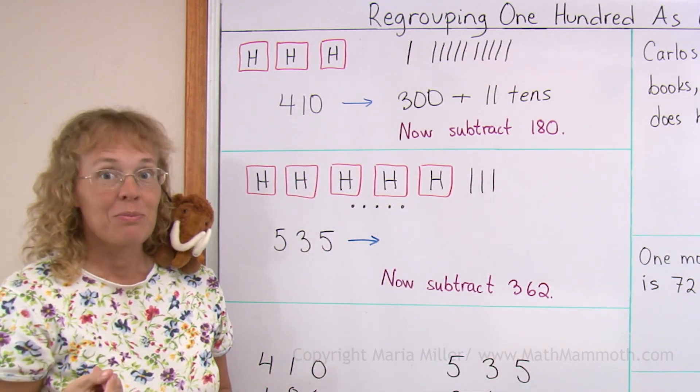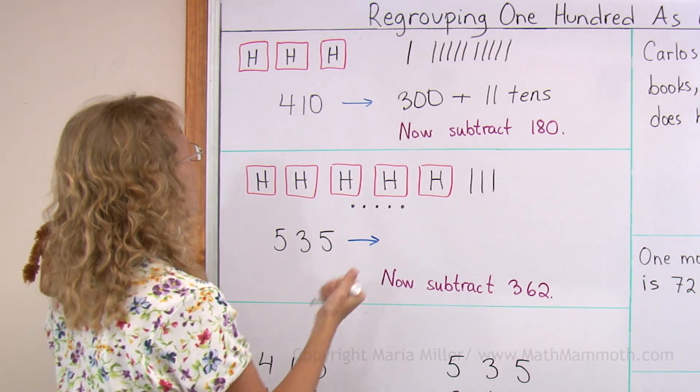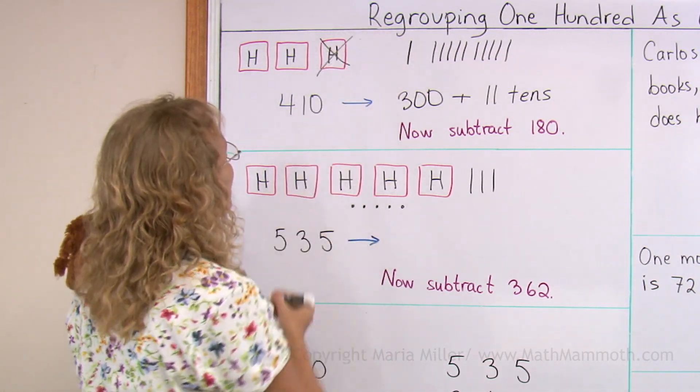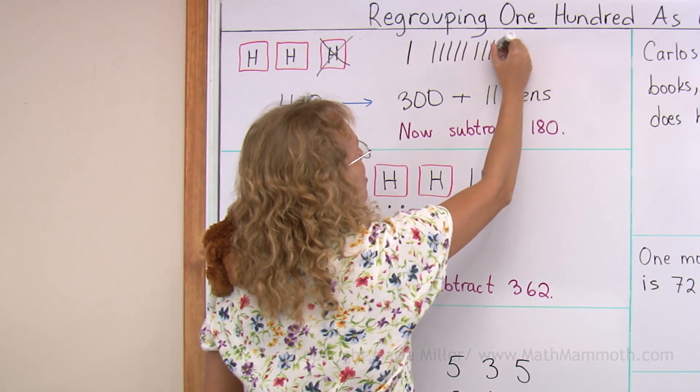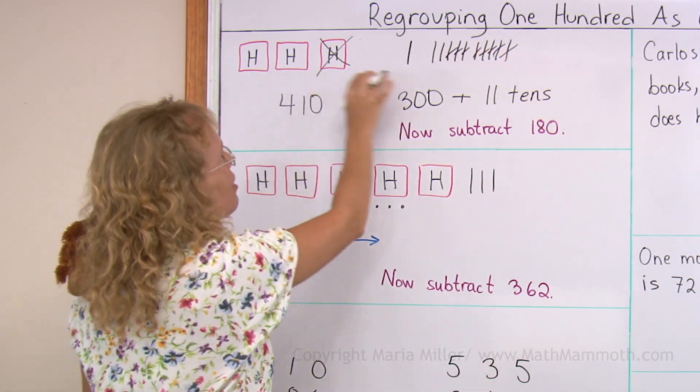And now we can subtract one hundred and eighty. Which means, okay, one hundred. And then eighty or eight tens. Two, three, four, five, six, seven, eight. And so what I have left is two hundred thirty.